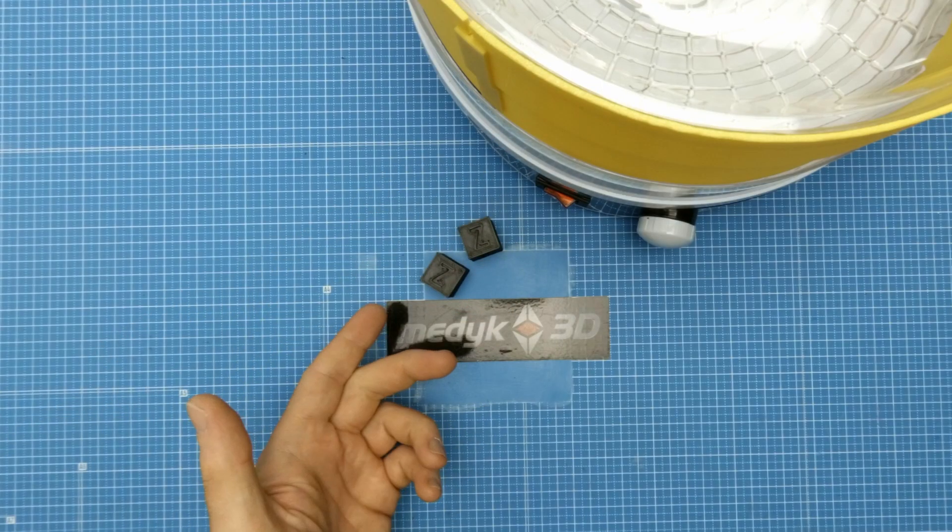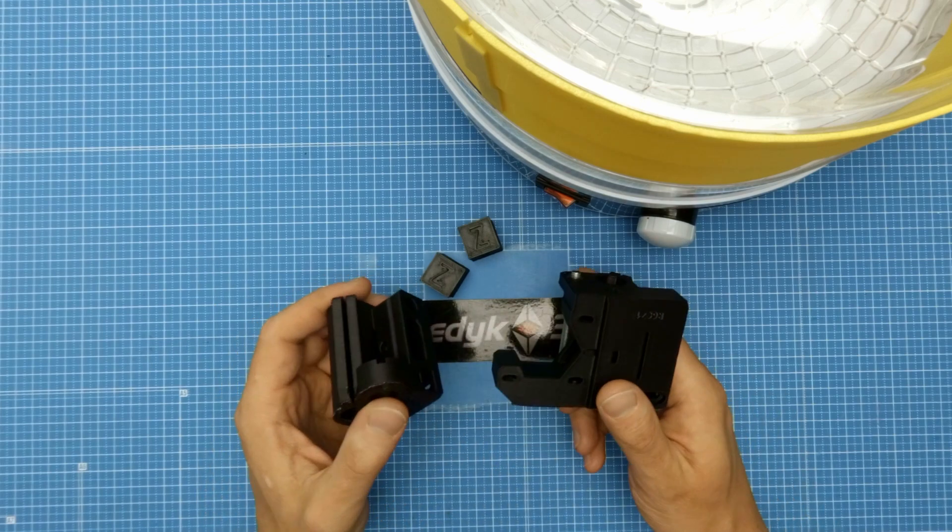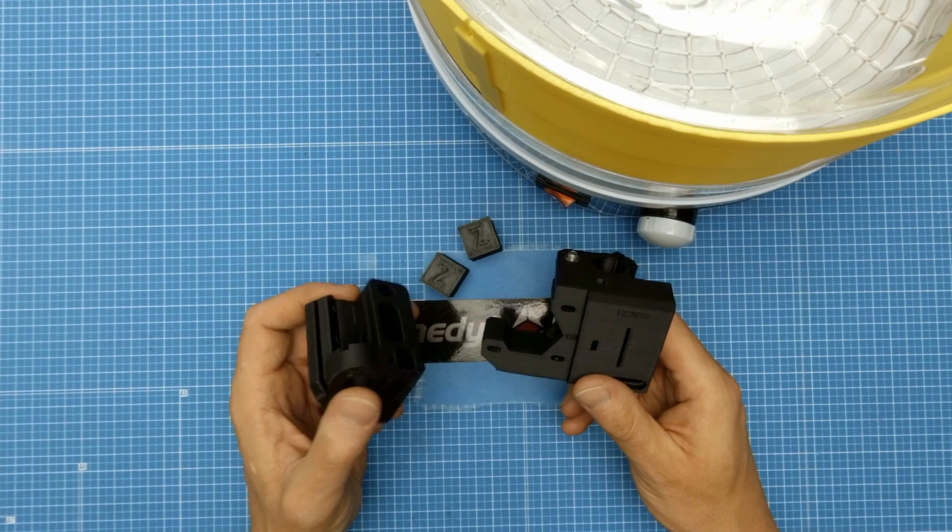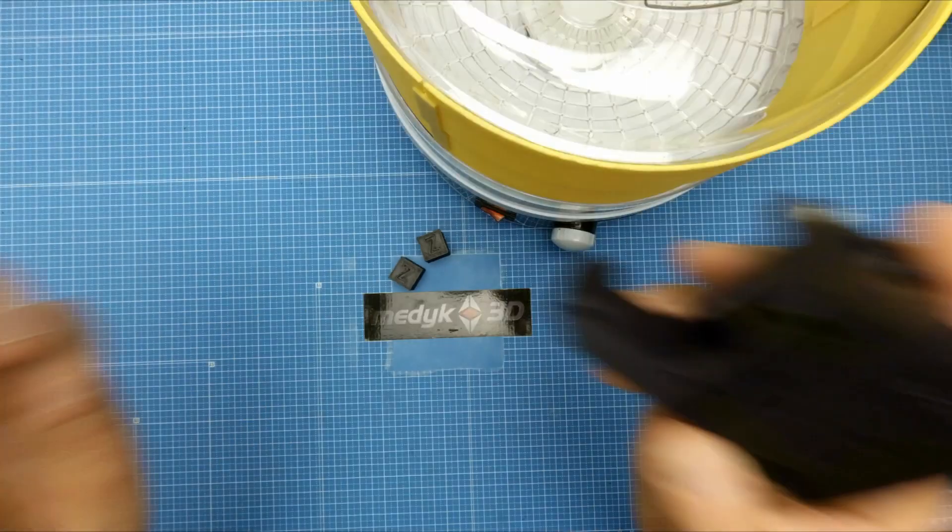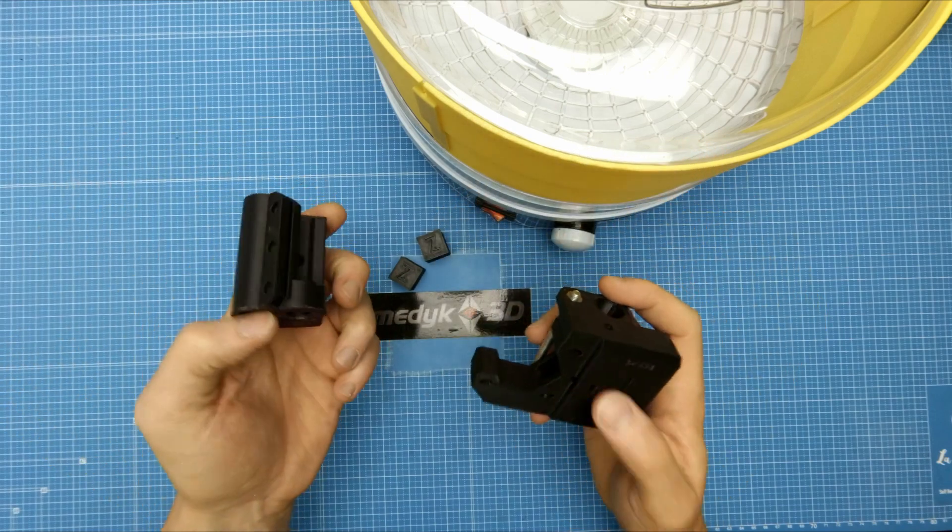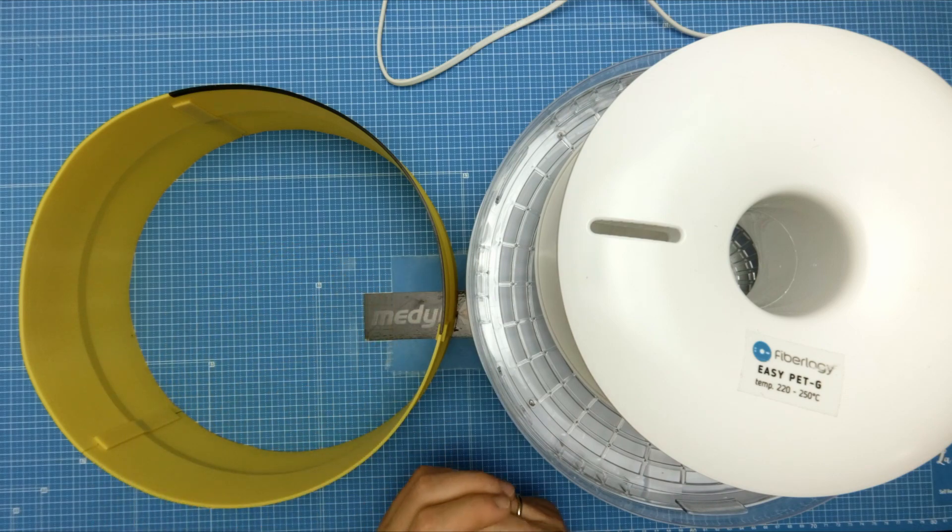First, I printed some calibration cubes and after minor changes in my settings, I printed those parts. Those are parts for my next Anet A6 upgrade to make linear rail x-axis. The surface is quite nice and the print quality is okay. I would say that for only $22 the results are pretty nice.